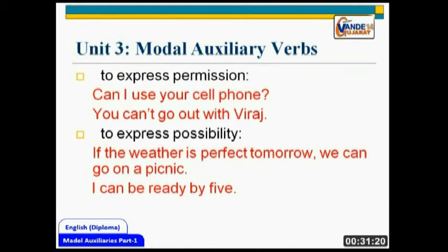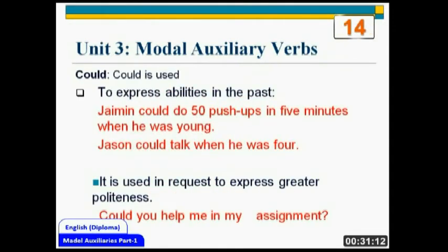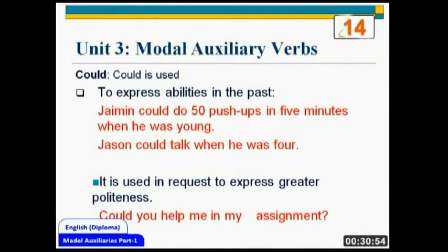You have examples with you — you can read these examples and then form your own sentences. The next auxiliary we are discussing is 'could'. Could is used to express abilities in the past. When you are talking about something that you were able to do in the past but now it is not possible, then you would use 'could'.